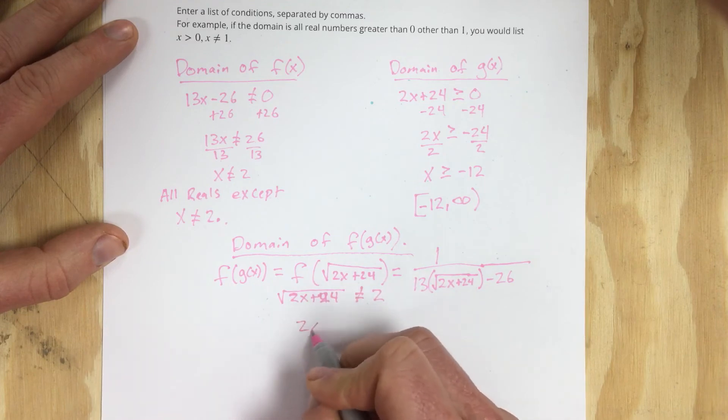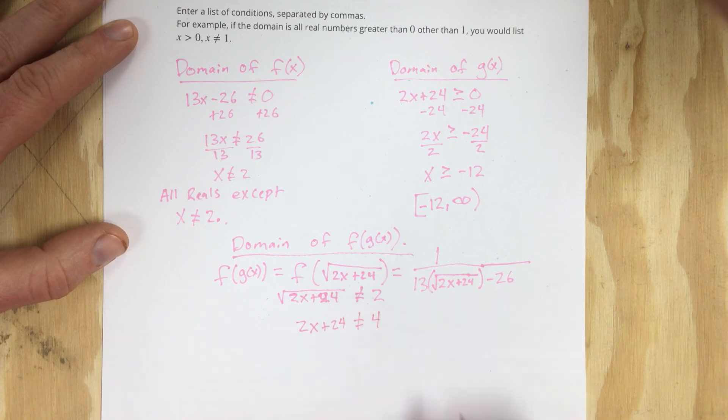I'm going to subtract 24, so 2x cannot equal negative 20. And then divide by 2. X cannot equal negative 10.